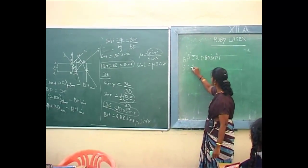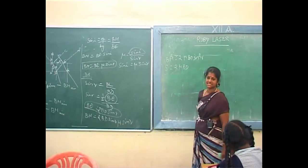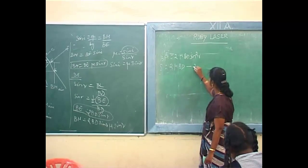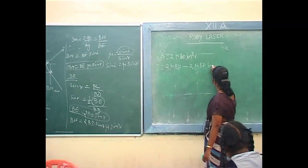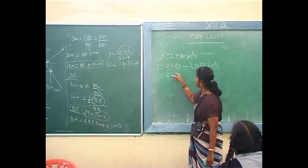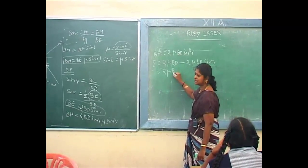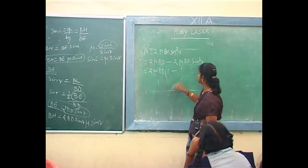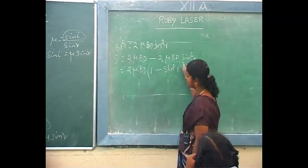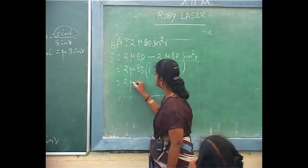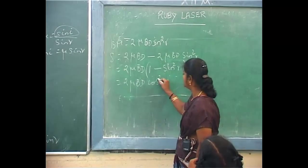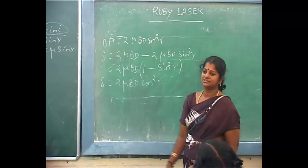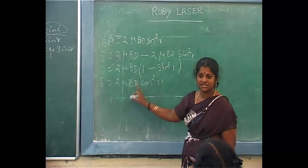So what is delta? It is equal to 2μ BD minus BM — for BM only, we substitute, which is equal to 2μ BD sin²R. What quantities are common: 2 is common, mu is common. So we have 1 minus sin²R remaining, which is cos²R.